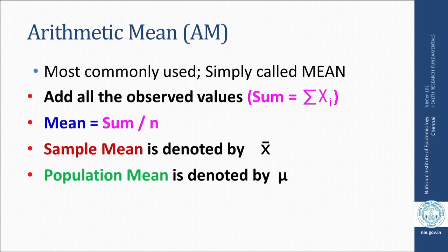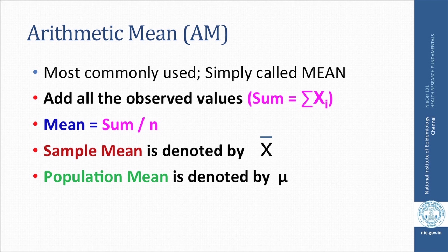To compute the mean, you add all the observed values — we call that the sum, denoted as sigma xi in mathematical notation. The mean is simply that sum divided by the number of observations, which is n. The sample mean is denoted by x-bar (a line on top of x), and the population mean is denoted by mu.